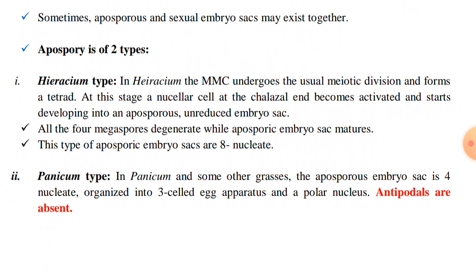The Hieracium type: in Hieracium, the megaspore mother cell undergoes the usual meiotic divisions and forms a tetrad. At this stage, a nucellar cell at the chalazal end becomes activated and starts developing into an aposporous unreduced embryo sac. All four megaspores degenerate while the aposporic embryo sac matures. This type of aposporic embryo sacs are 4-nucleate. In Hieracium type, the megaspore mother cell divides by meiotic division and forms spore tetrads, but the spores degenerate and the aposporic embryo sac develops from the nucellar cells or sometimes from the integument.